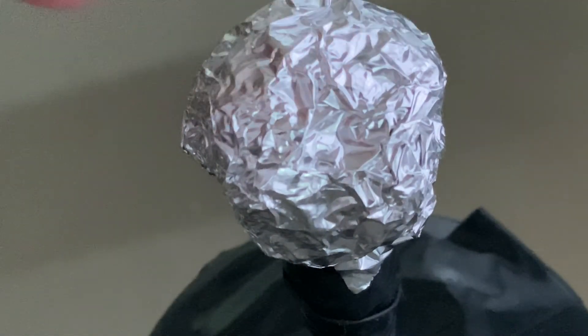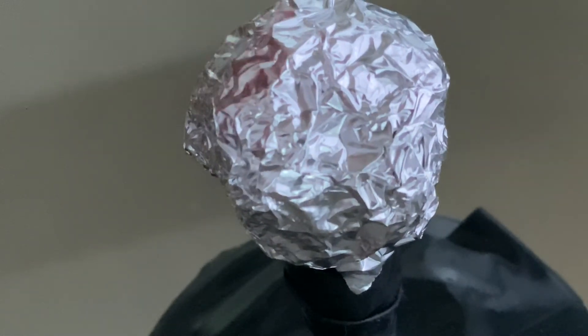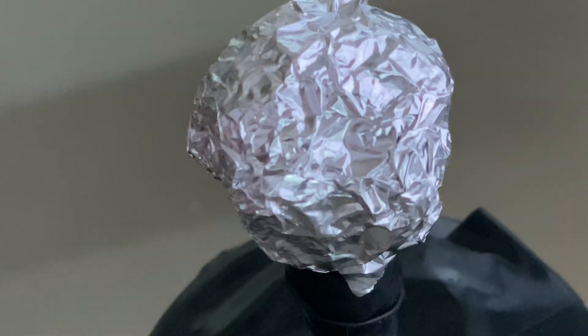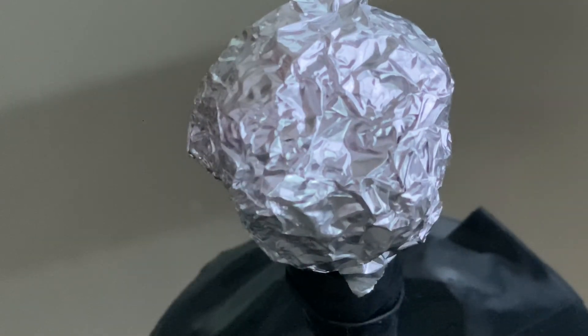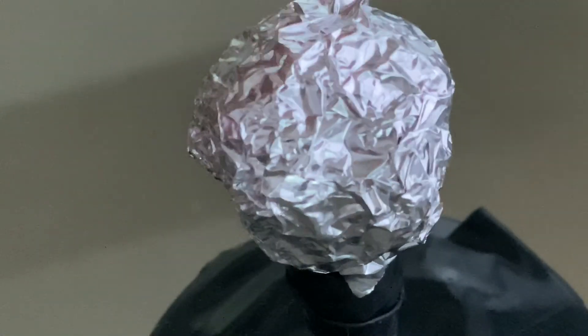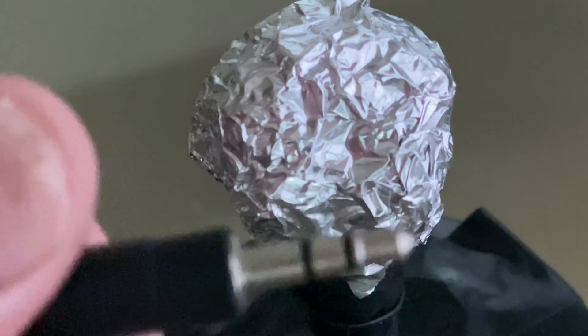Now if I take my finger and I touch it, you can see it doesn't shock me because when I take the prong and I put it on the aluminum foil, it discharges it. It shocks it and it takes all the electrons away. So I pretty much discharge it. That's why I can take my finger and it won't shock me because I just discharged it.